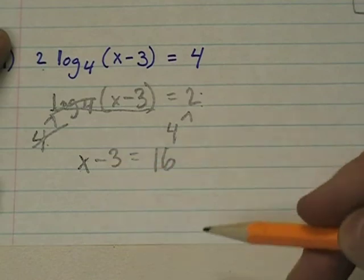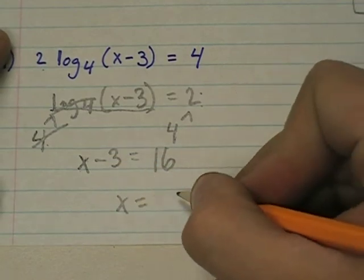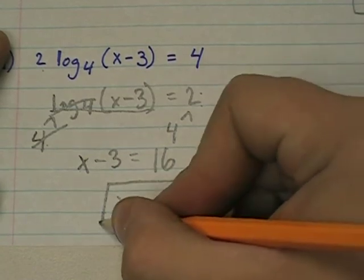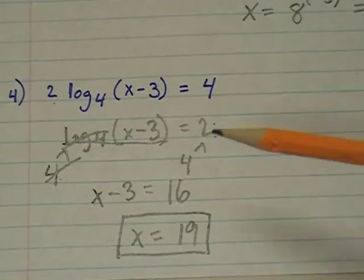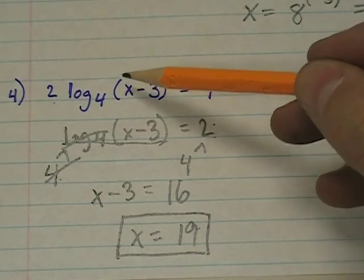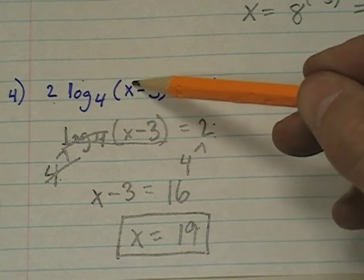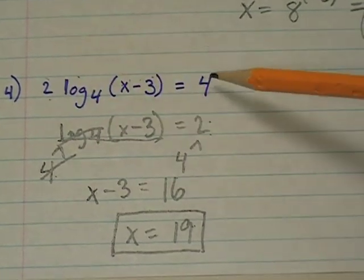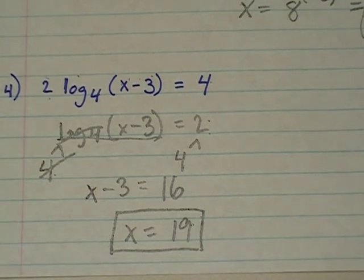Now what? Solve for x, add 3 to both sides. You get x equals 19. And again, what can you do with your answer? You can take this answer, 19, plug it in here, 19 minus 3 is 16. Take the log 4 of 16, multiply that by 2, and you should get 4. You can check these answers. If you have any questions, please come see me.